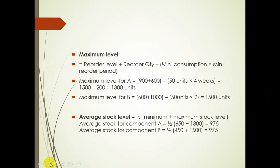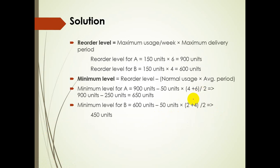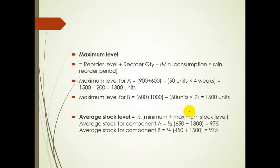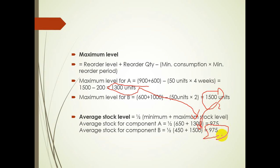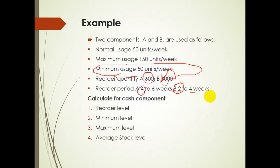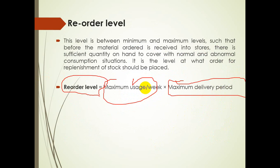Now clearing the board. For the average stock level the formula is: Average Level = ½ × (Minimum Level + Maximum Level). For A: ½ × (650 + 1300) = 975. For B: ½ × (450 + 1500) = 975. So the average stock level for both products is 975 units. That completes the setting up of various stock levels.